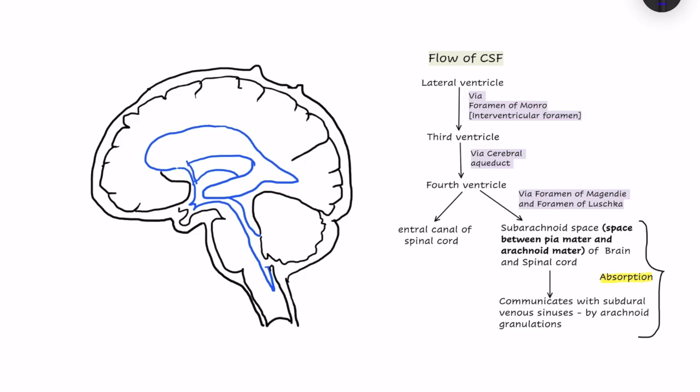Cerebrospinal fluid is like the extracellular fluid of the brain. Let us see how cerebrospinal fluid is formed, how it flows, what are its functions, with some clinical applications. This cerebrospinal fluid forms in the majority in the lateral ventricle.